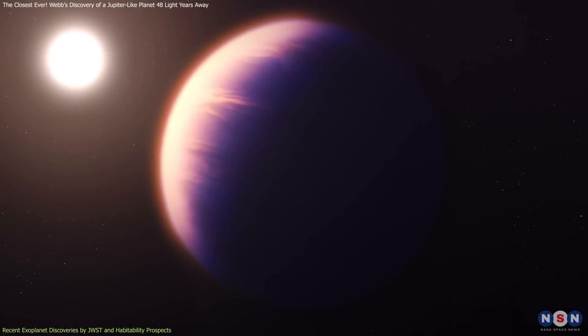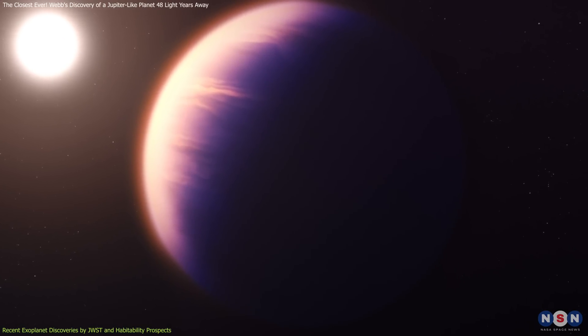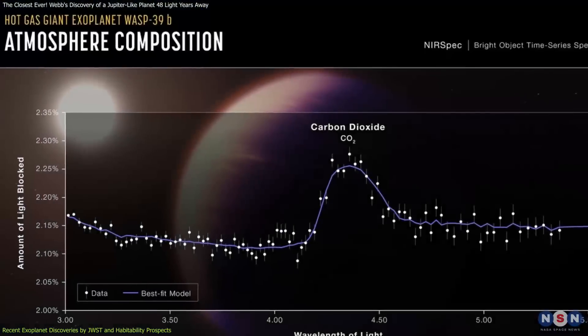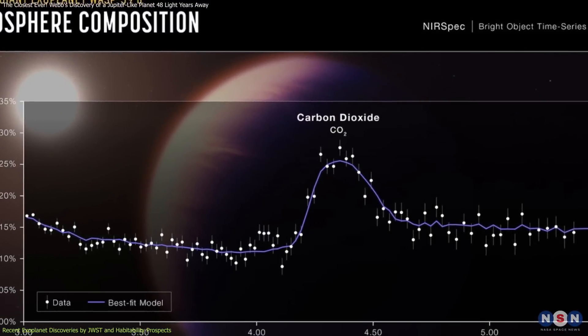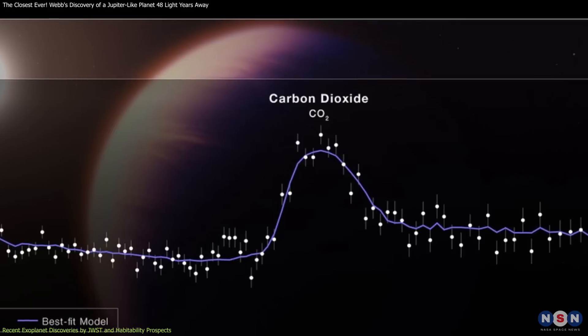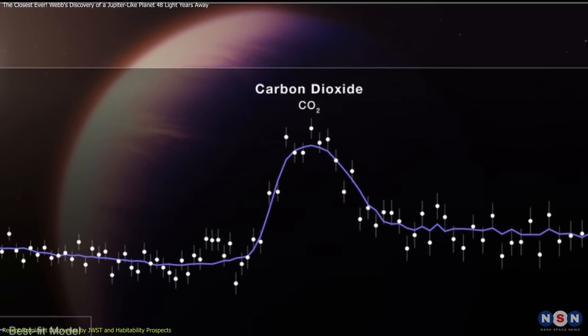One recent discovery was WASP-39b. Situated about 700 light-years from Earth, this exoplanet is particularly intriguing due to its atmospheric composition. Webb has detected significant traces of carbon dioxide in its atmosphere,